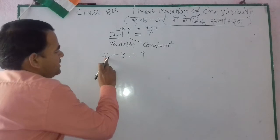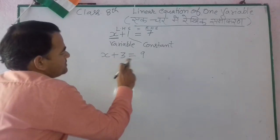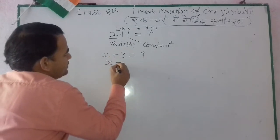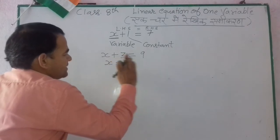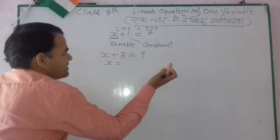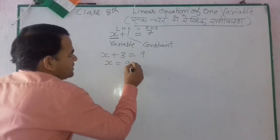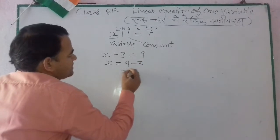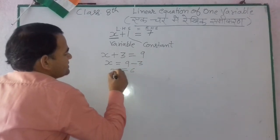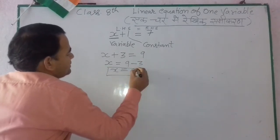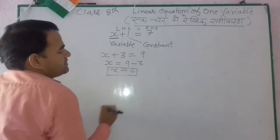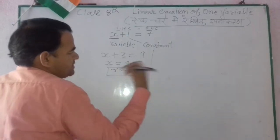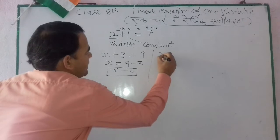For example, x plus 3 is equal to 9. So x's value — on the opposite side, the right side will change. If 3 goes to the right side it becomes minus 3, so 9 minus 3 equals 6. X's value is equal to 6.